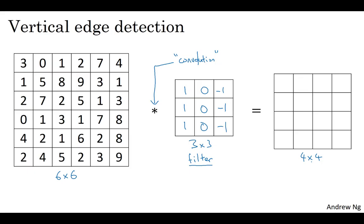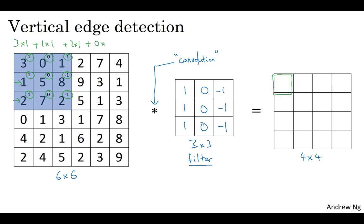The way you compute this four-by-four output is as follows. To compute the first element — the upper-left element of this four-by-four matrix — you take the three-by-three filter and paste it on top of the three-by-three region of your original input image: 1, 1, 1, 0, 0, 0, -1, -1, -1. Then you take the element-wise product and add up all nine numbers. So the first column gives you 3×1 + 1×1 + 2×1, the middle column gives 0×0 + 5×0 + 7×0, and the right column gives 1×(-1) + 8×(-1) + 2×(-1). Adding up these nine numbers gives you negative five.